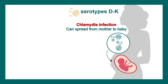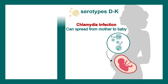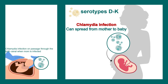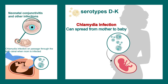Serotypes D through K can lead to other types of infection and are mostly transmitted during birth. In general, Chlamydia infection can spread from mother to baby. During delivery, as the fetus passes through the birth canal, the baby can get infected with Chlamydia, which is why neonatal conjunctivitis and other infections are not uncommon.